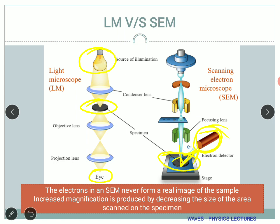In SEM, we have the scintillation detector, the photo multiplier tube, and a lot of lenses — the projection lenses, objective lens, condenser lens and so on. In order to focus the electron, we use a field — it might be an electromagnetic field — and we can apply some kind of field to control the beam. So we have a focusing lens, condenser lens and so on. The source in a light microscope is light, and here the source is the electron source.